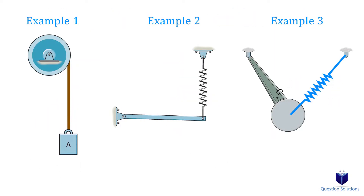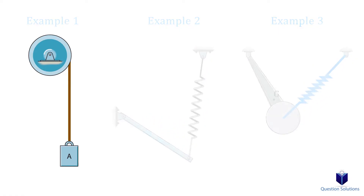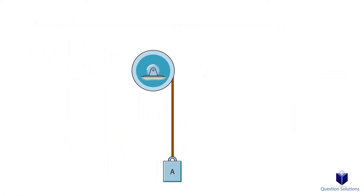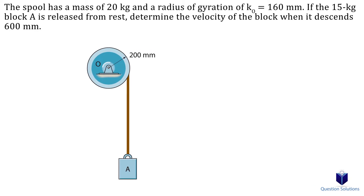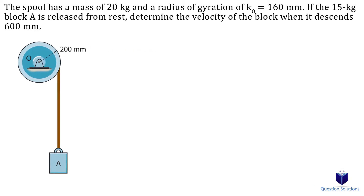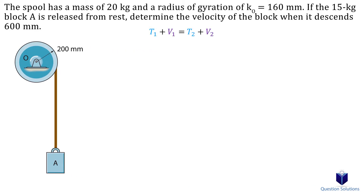Let's take a look at this problem where we have a block attached to a pulley and we need to find the velocity of the block when it descends 600 millimeters. To solve this problem, we're going to use the conservation of energy equation, so let's write it down. We will do each section separately and then add it up.